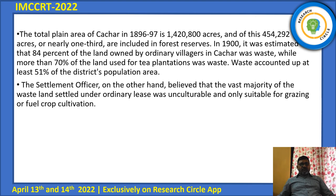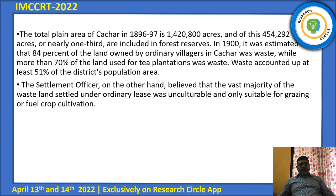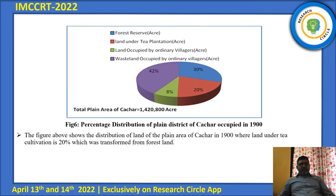In 1900, it was estimated that 84% of the land owned by ordinary villagers in Kachar was waste, while more than 70% of the land used for tea plantation was waste. Waste accounted for at least 51% of the district's total area. This figure shows the land distribution in Kachar by percentage.